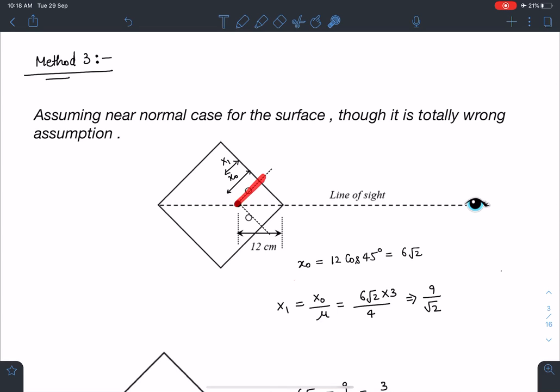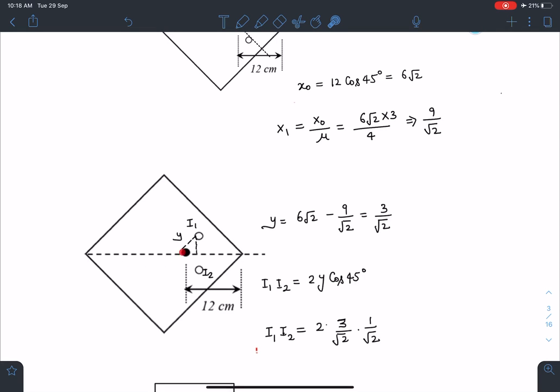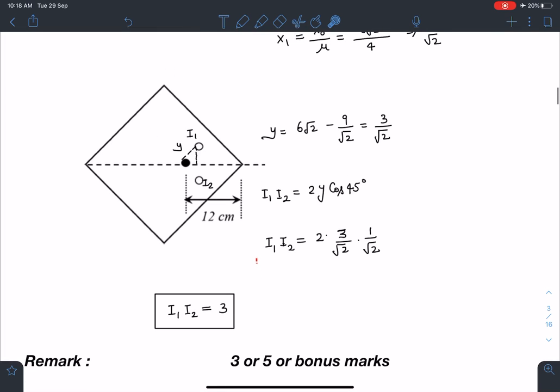So I will say this length is X₀ which is 6√2 we have derived. And then I can say for this observer he will find image somewhere here on the same line. And that is nothing but X₀/μ. When I simplify this I will be getting this distance X₁ from the surface as 9/√2. Now here this Y I can write as 6√2 - 9/√2 which turns as 3/√2. Then 3/√2 cos45° this distance becomes 3/2. Similarly other side also it will be at 3/2. And total distance between I₁ and I₂ becomes 3 in that situation which comes as a perfect integer.